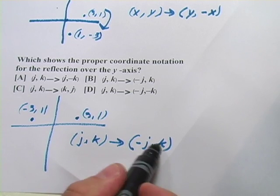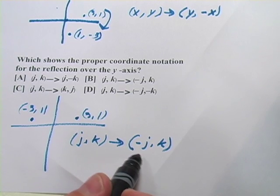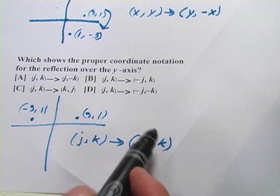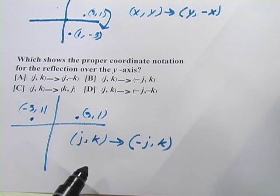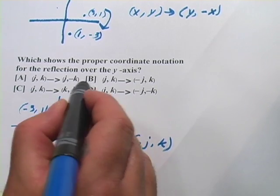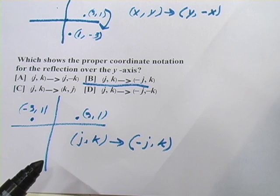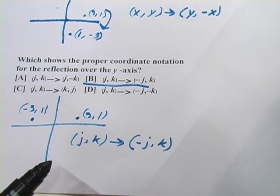Don't let that confuse you — it's just the same thing as x and y. They're just substituting j for x and k for y. So the correct answer would be B. That's a little bit of practice with coordinate notation.